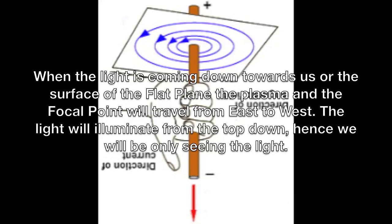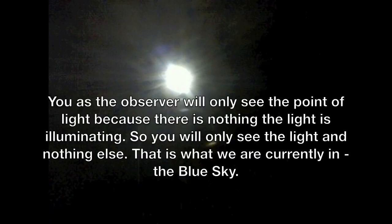When the light is coming down towards us or the surface of the flat plane, the plasma and the focal point will travel from east to west. The light will illuminate from the top down, hence we will be only seeing the light. The best analogy is someone standing at the edge of a forest at night shining a flashlight at you standing in a grassy clearing. You as the observer will only see the point of light because there is nothing the light is illuminating. That is what we are currently in — the blue sky.